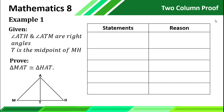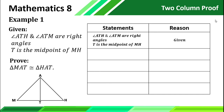Now let's use the following concepts in proving statements. For example number 1: given that angle ATH and angle ATM are right angles, T is the midpoint of MH — prove that triangle MAT is congruent to triangle HAT. The first thing we need to input on our statement is our given, and put 'given' as the reason.